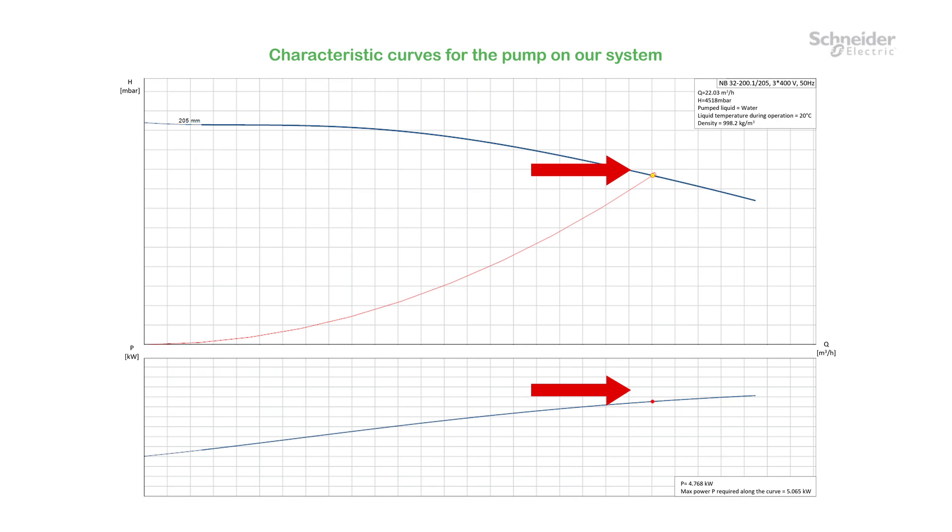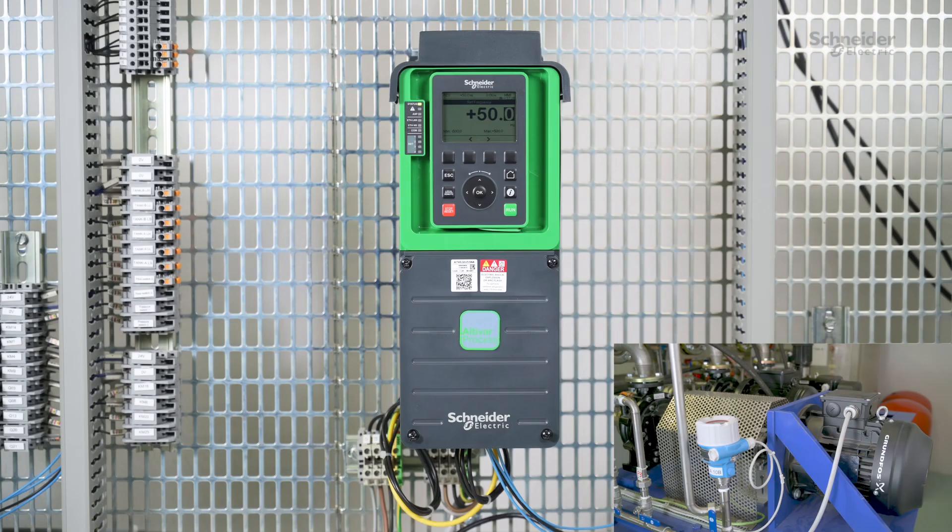You can find the coordinates of the BEP on the data sheet of the pump. The ATV600 will monitor where the actual operating point of the pump and associated motor is relative to the BEP through pump characteristics curves.